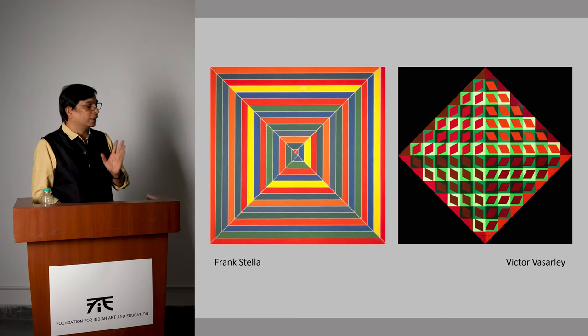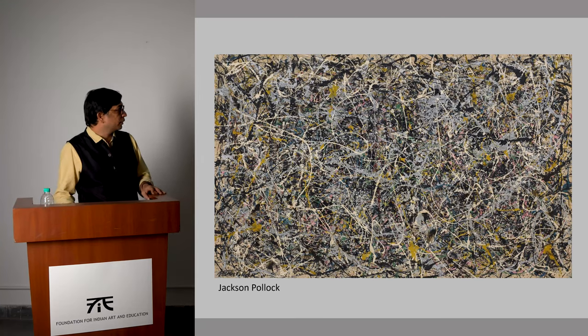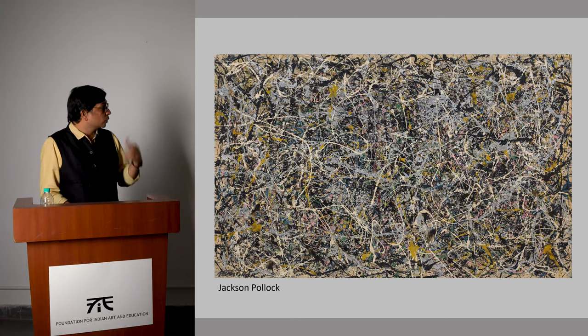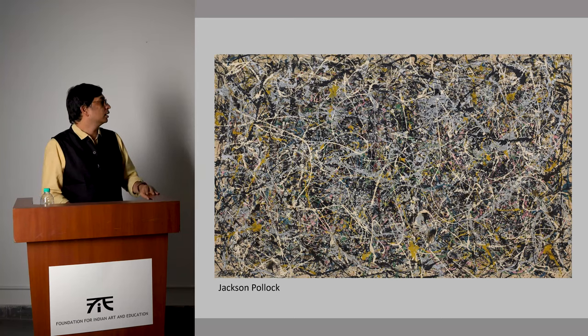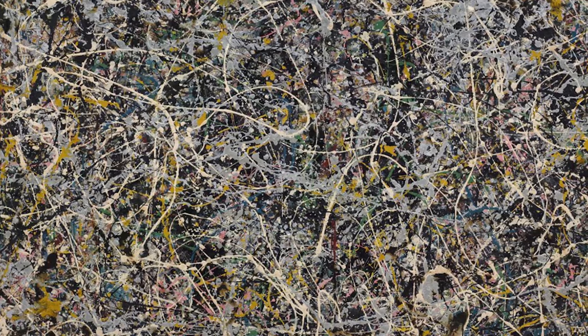Frank Stella and Victor Vasarely work with very geometric abstraction, using the power of colour and the understanding of contrasting colours to draw attention. All these strategies are used by abstractionists. This is Jackson Pollock — the entire canvas was laid on the floor, he would not sit and paint; he would walk around, or use wooden bridges he had made to walk on, and drip paint. The stroke going around is a trace or documentation of the way the hand was moving.